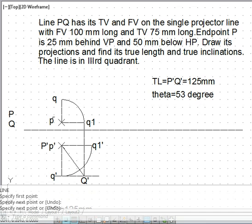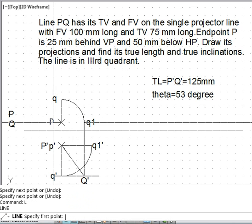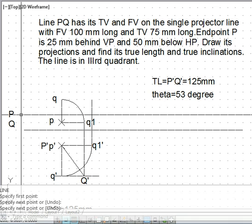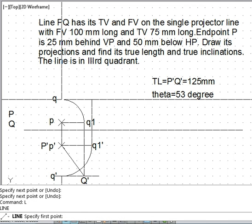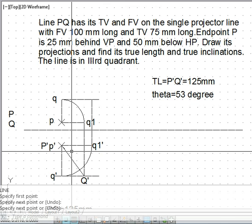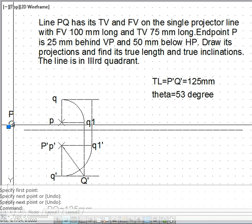So this point is q1 dash. And here corresponding to q1 dash when we draw the vertical line, we get the vertical locus of capital Q.